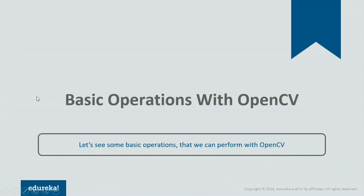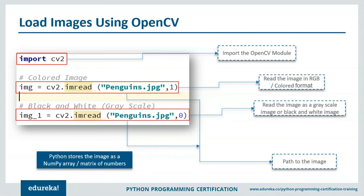Now we'll jump into certain basics of OpenCV — how to read an image, how to perform basic operations like resizing and displaying. The first thing you need to do is import the OpenCV module. Then we read the image with the help of the imread function. Passing 1 keeps it as a colored image; passing 0 converts it to grayscale. Let me open PyCharm and execute the code. I've imported the CV2 module and used imread with the path to my image — Frank.jpg. Passing 1 keeps it colored, so it will convert it into a 3D matrix. Let me print this and execute it.